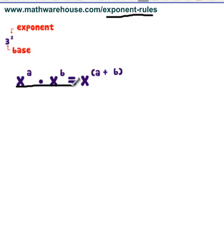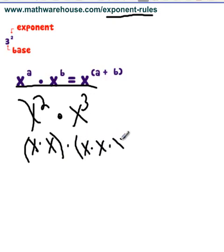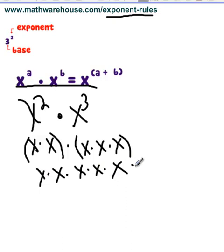This first rule is pretty general, so let's work our way to that. Let's say we have x squared and we're going to multiply that by x to the third. Let's think about what that means. x squared really means that we have x times x, and x cubed really means that we have x times x times x. All I did was rewrite these without the exponents. You can rewrite this as x times x times x times x times x, and lo and behold, we have x to the fifth.